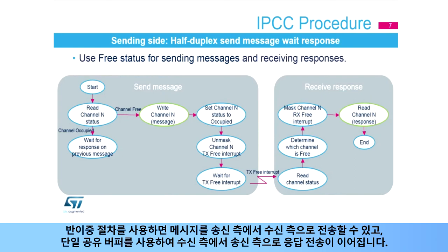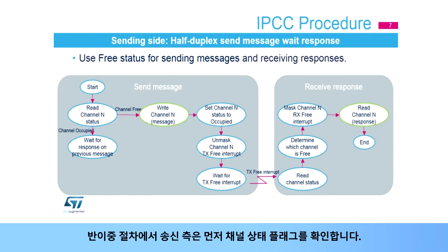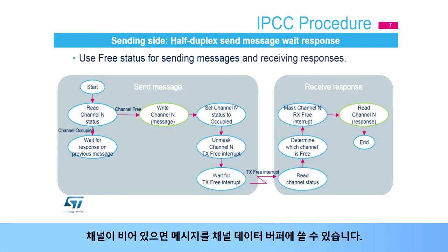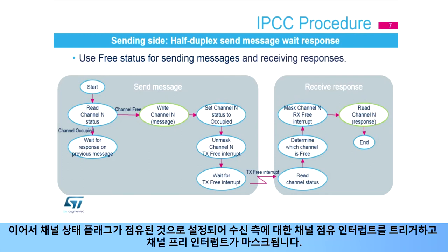The half-duplex procedure allows the transfer of a message from a sending side to a receiving side, followed by a response sent from the receiving side back to the sending side, using a single shared buffer. The sending side will first check the channel status flag. If the channel status flag indicates the channel is occupied or flow-off — due to the receiving side not yet having sent a response to a previous message — the sending side waits for the response, a software flag. When the channel is free, the message can be written in the channel data buffer. Subsequently, the channel status flag is set to occupied, which triggers a channel-occupied interrupt for the receiving side, and the channel-free interrupt is masked.